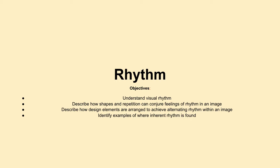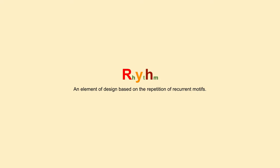Hello everyone and welcome to this week's unit on rhythm. Our objectives for this week are to understand visual rhythm, to describe how shapes and repetition can conjure feelings of rhythm in an image, describe how design elements are arranged to achieve alternating rhythm within an image, and to identify examples of where inherent rhythm is found.